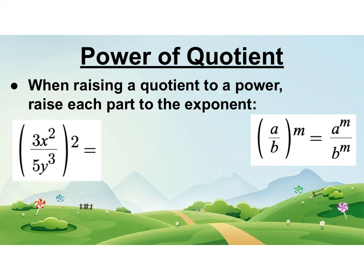Power of a quotient. Another example. Again, don't forget to go to the integers and to everything with multiplying there. So 3 squared is 9. x squared squared is x to the 4th. And my denominator 5 squared is 25. And y cubed squared is 3 times 2, which is y to the 6th.